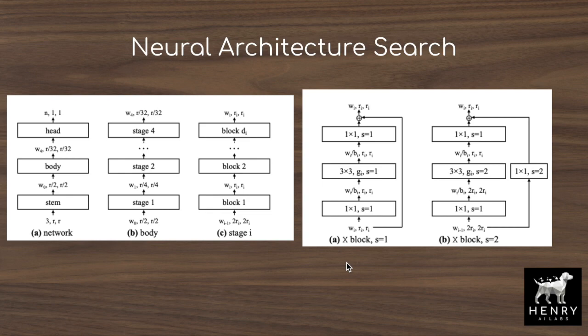In a similar way that neural networks automatically find features describing high-dimensional data rather than manually designing the features, we're looking to automatically design the neural networks themselves in an area of research known as neural architecture search. A core characteristic of neural architecture search is the design space, which determines all the possible neural networks that the search would be able to produce. This paper starts off with the AnyNet design space, which biases the search with the structure of stem, body, and head and fixed blocks to place in each stage.